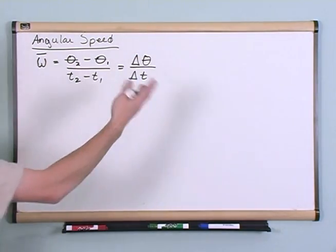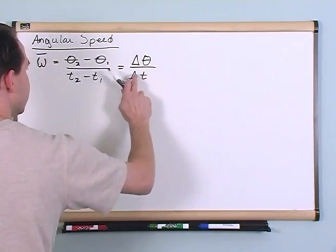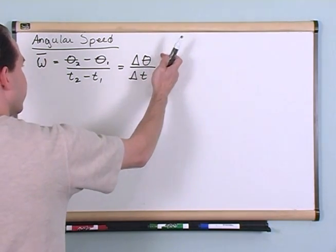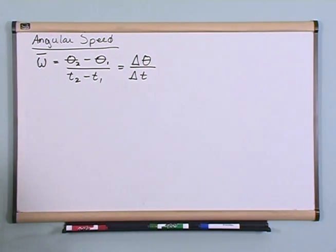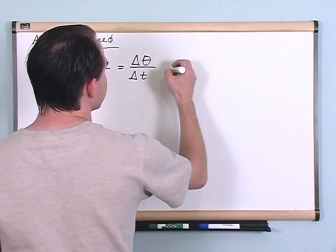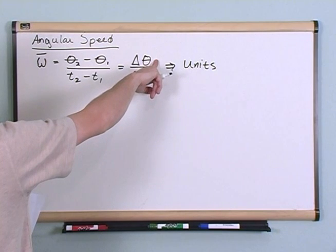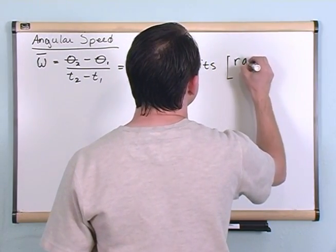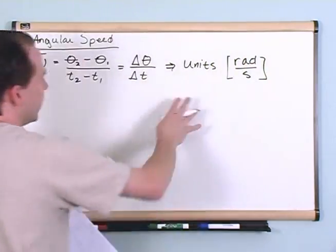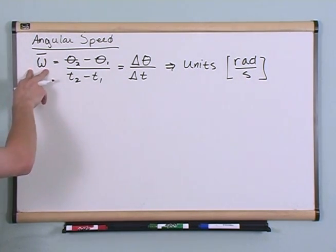This equation is exactly what I showed you with my hand: how fast did my hand change, how many degrees did my hand change, and how long did it take. Angles per unit time — that's exactly what it's telling me. The units: on the top you've got radians or degrees, but in most cases radians. On the bottom you've got seconds, so the units are radians per second. Almost always you're going to use radians per second. This is an average number because I'm just looking at the endpoints.